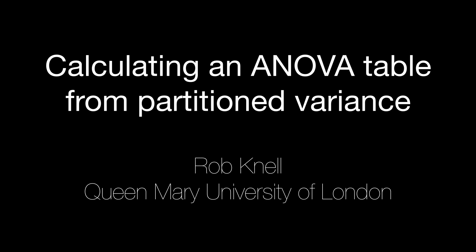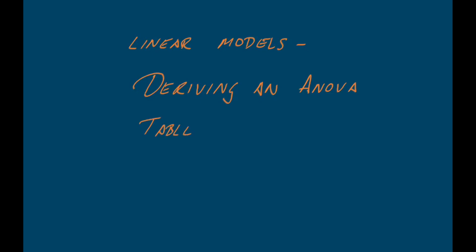This video is a follow-on from a previous video where we looked at how to partition variance for analysis of variance or ANOVA. What we're going to look at in this video is how we can use that partitioned variance to derive an ANOVA table, and we can then use that to carry out hypothesis tests on whether or not we have differences between the means in our data set.